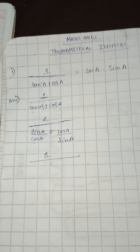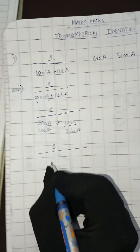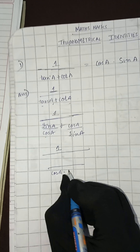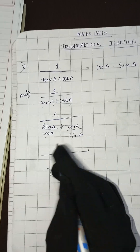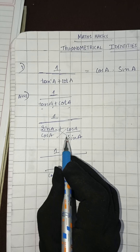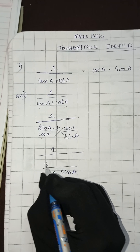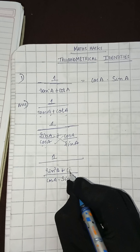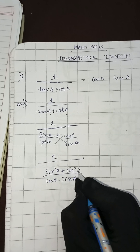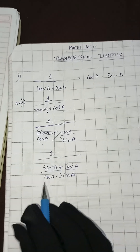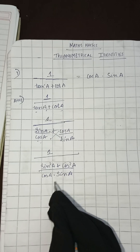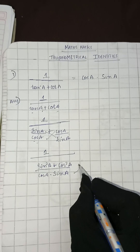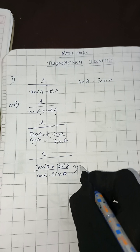Now we'll take the LCM. The LCM of the denominators — cos A and sine A — will be cos A times sine A as the denominator. We do the cross multiplication: sine A times sine A gives sine squared A, plus cos A times cos A gives cos squared A.